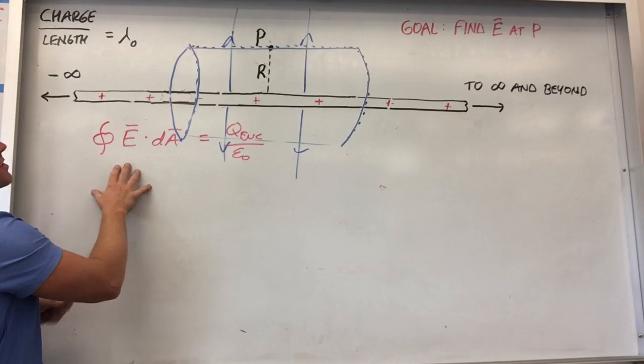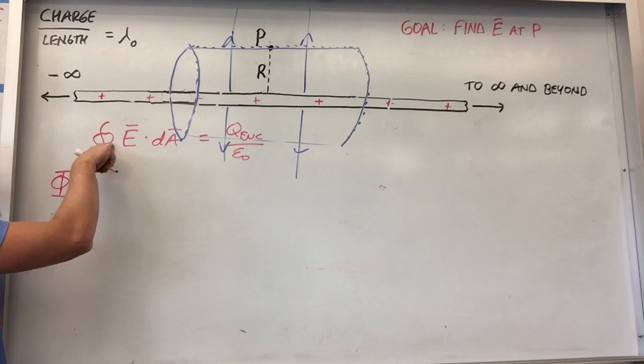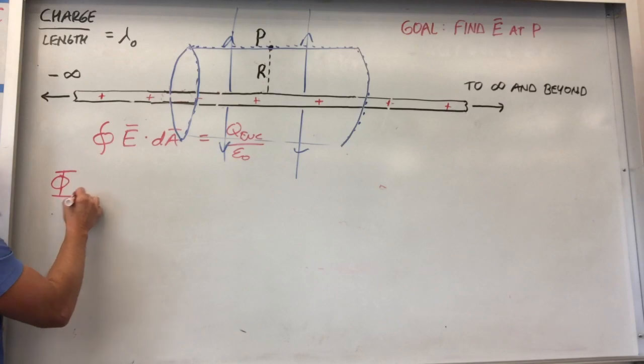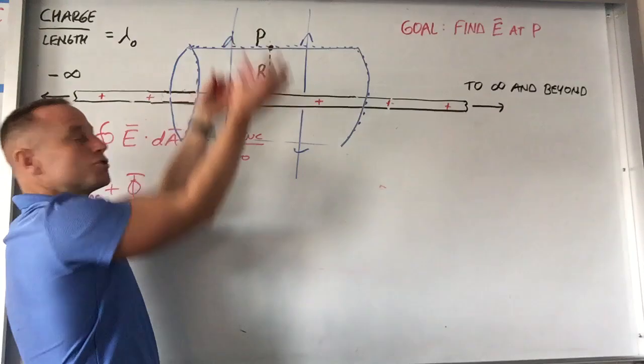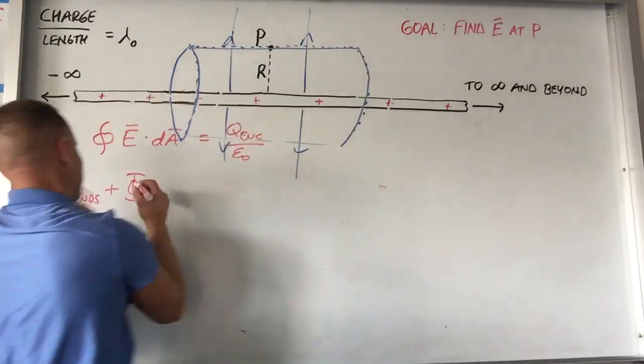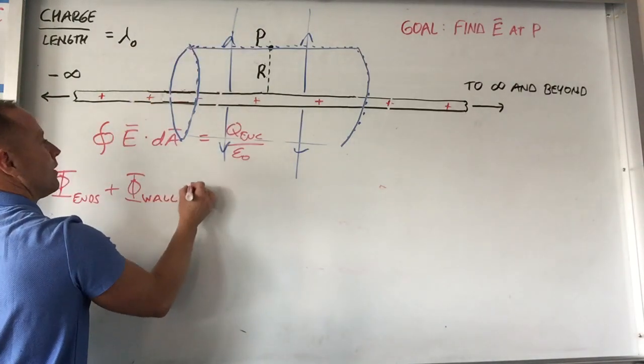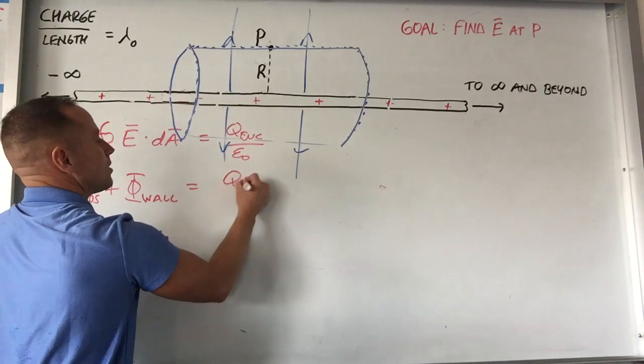Well, the flux through the end caps, right? This is just the total flux through the surface. So this is the flux. I'm actually changing symbols instead of writing it as integral around closed surface. This is the flux. So this will be the flux through the ends plus the flux through like the soup can label, right? Here's the top and bottom of the Campbell's soup can. Here's the soup can label. So like the wall, the wall of the cylinder. And that's going to be the charge enclosed over a constant.